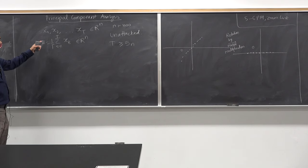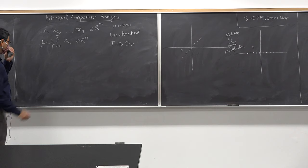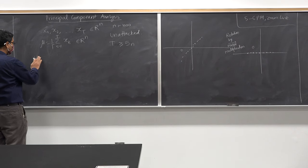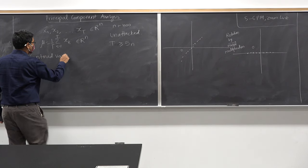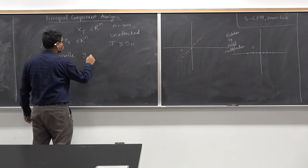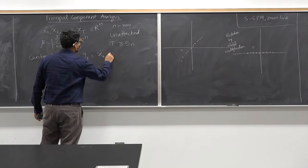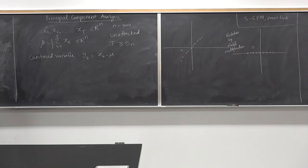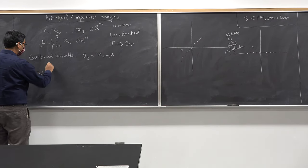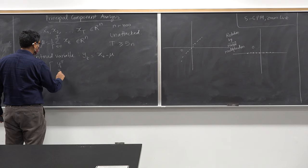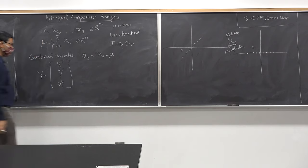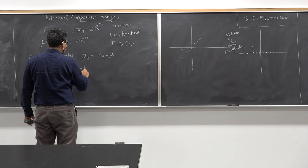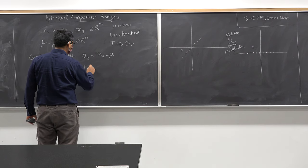You have a clean data set, you compute the mean, and now you define the centered variable Yt which is Xt minus mu. Then you define a matrix Y which is [y1ᵀ; y2ᵀ; ... ; yTᵀ], so this matrix Y is in R^(T×n).